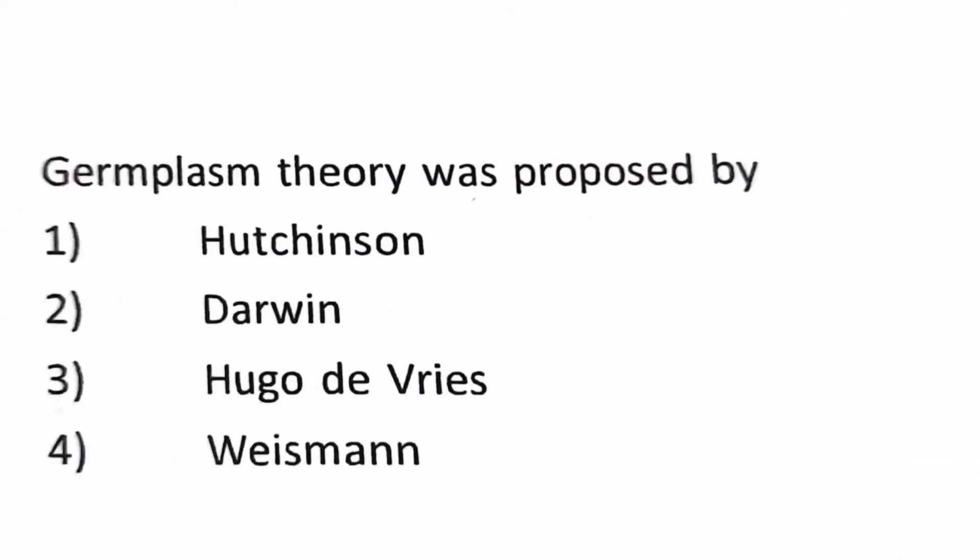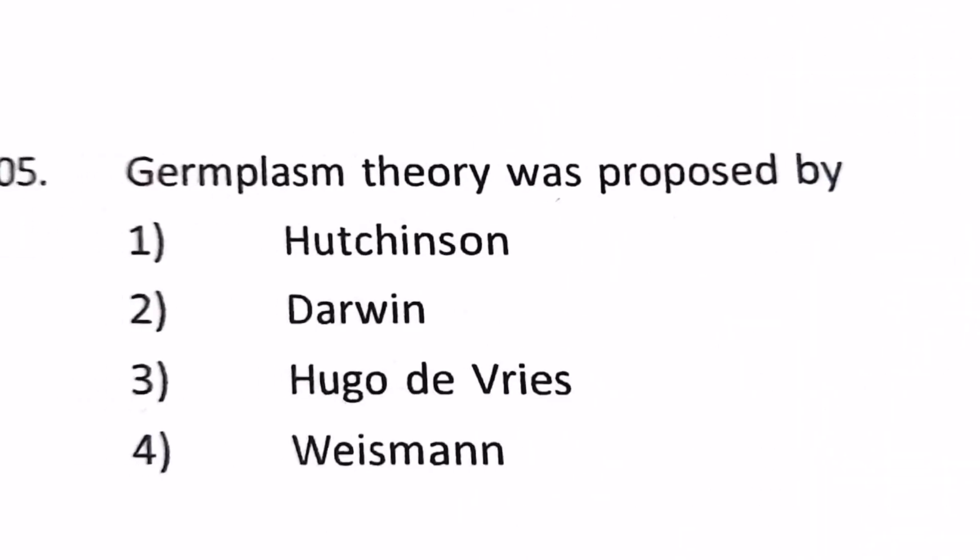Our next question is: germplasm theory was proposed by 1) Hutchinson, 2) Darwin, 3) Hugo de Vries, 4) Weismann. Our answer is Weismann.